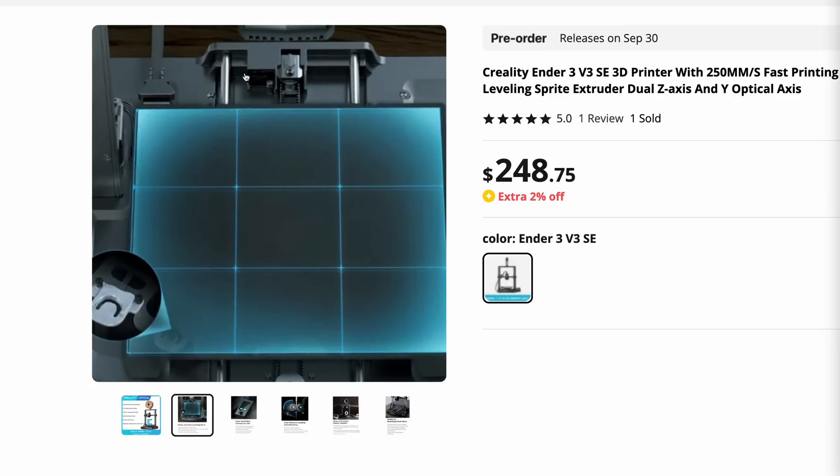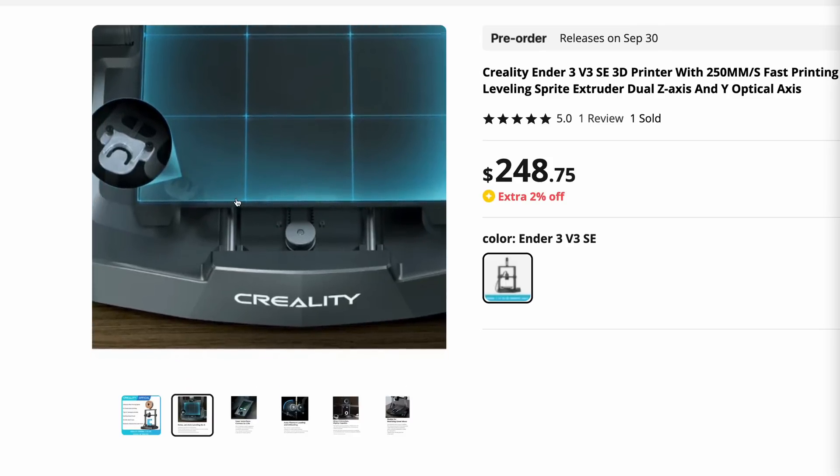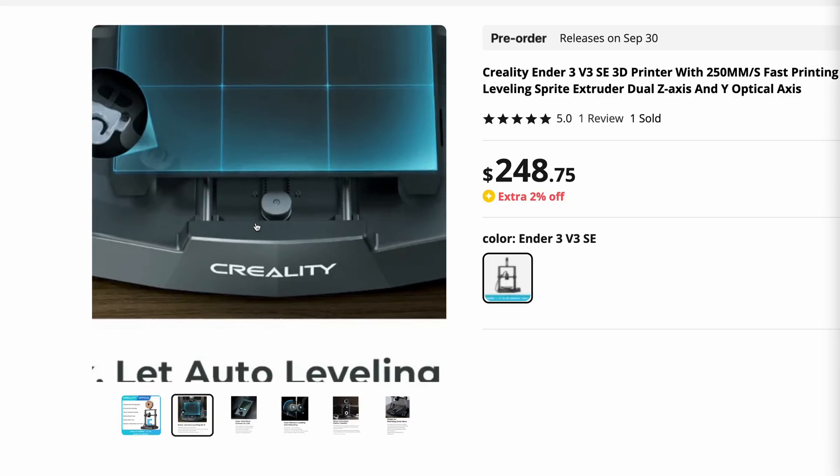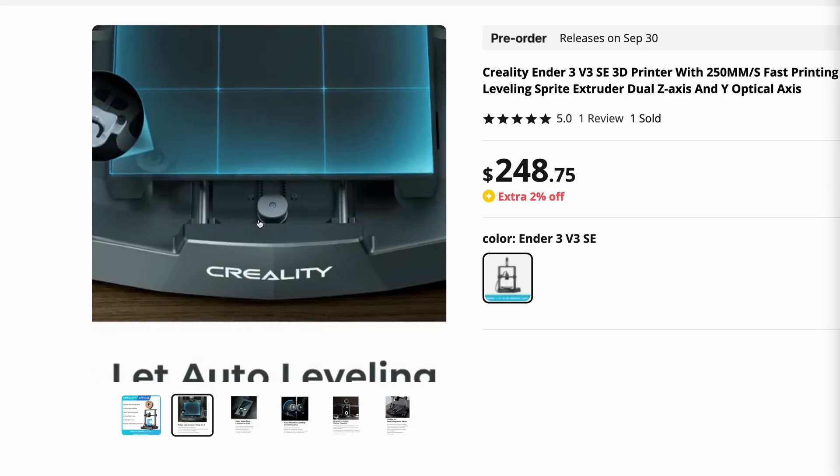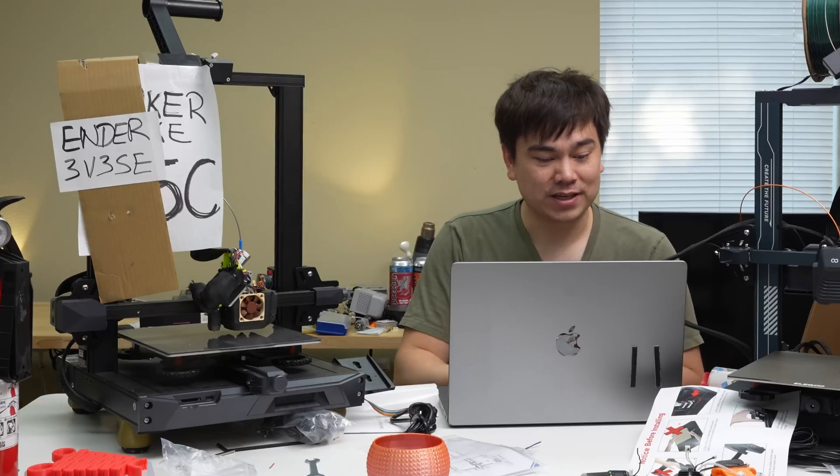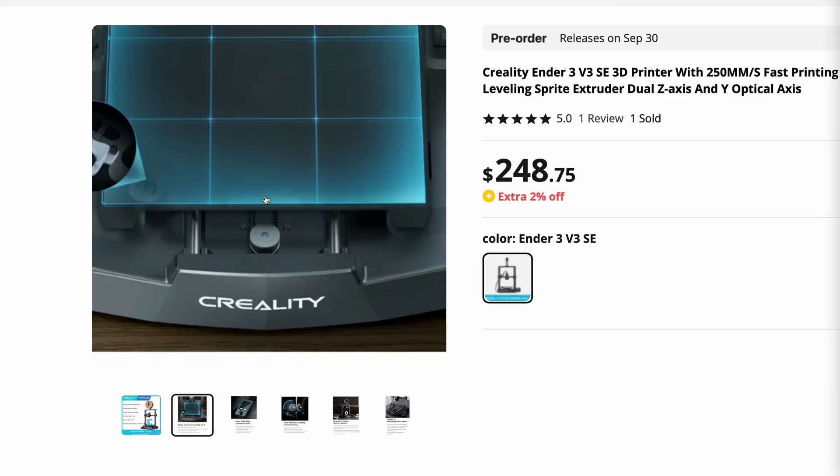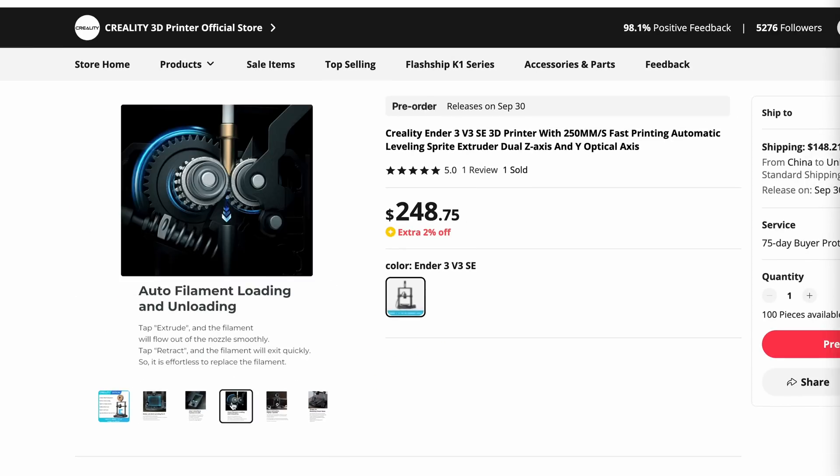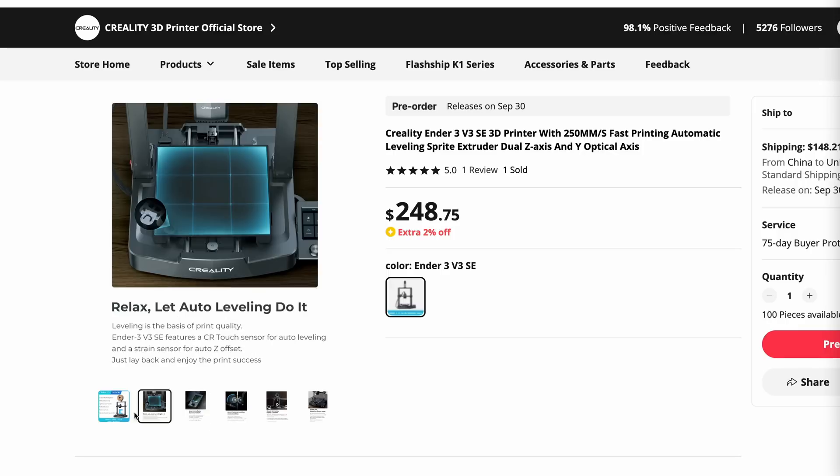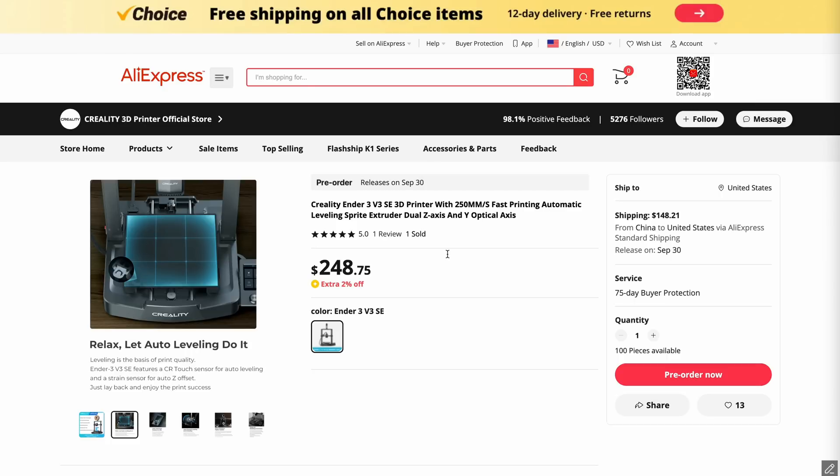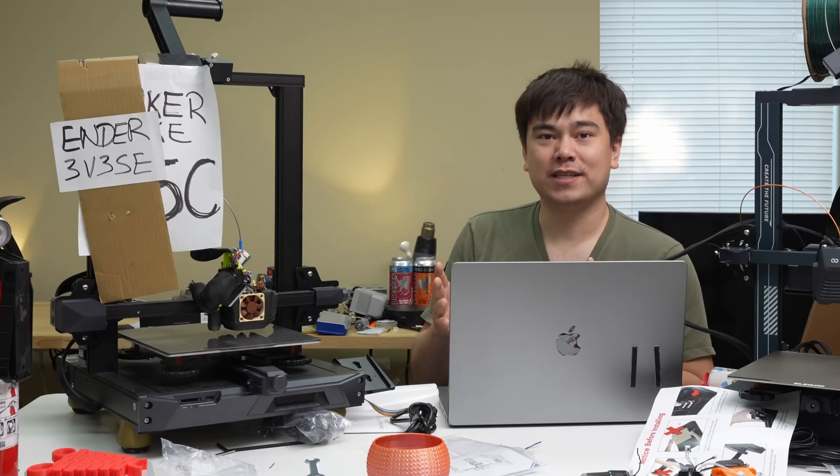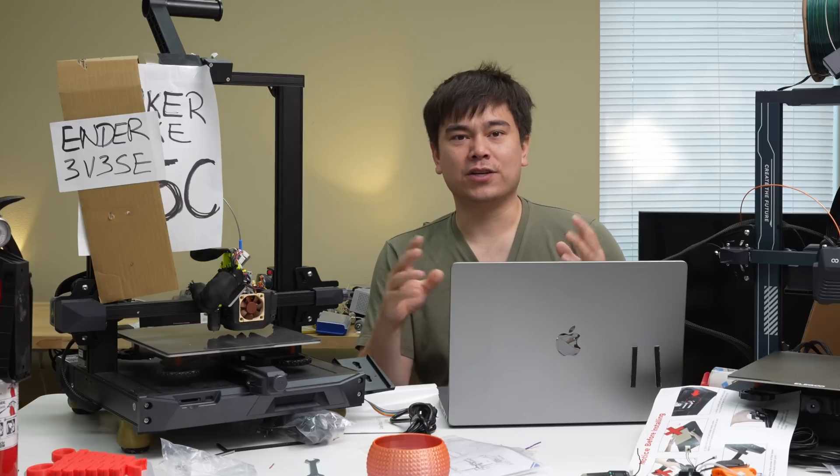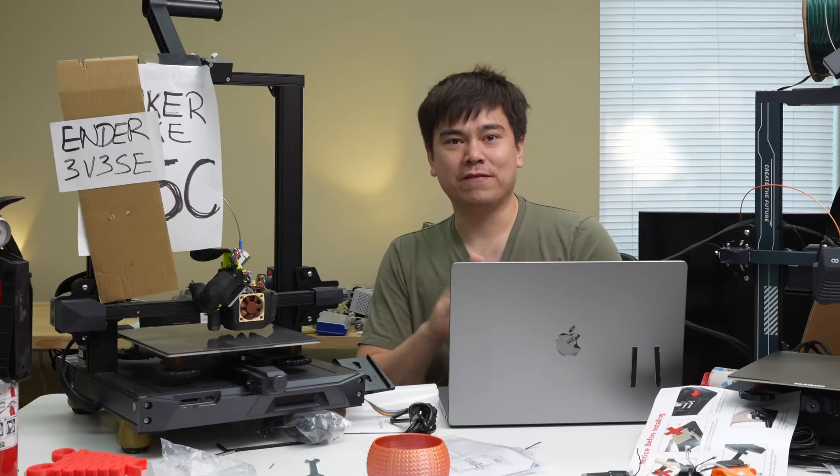That's going to be slightly different than the load cell system that you see on the K1 and the P1P, which have load cells under three points of the bed, and they can trigger everywhere on the board. In the Ender 3's application, they're just going to put one load cell in the bottom left corner that it's going to use to do that offset, and then they're going to use a traditional CR touch to do the rest of the mesh bed leveling. So that's awesome to see here. It says it's going to be released on September 30th. I imagine we'll see video reviews on this thing starting sometime next month. I think this is going to be a return to form by Creality where they're going to make something that's cheap, moddable, and fun to use.